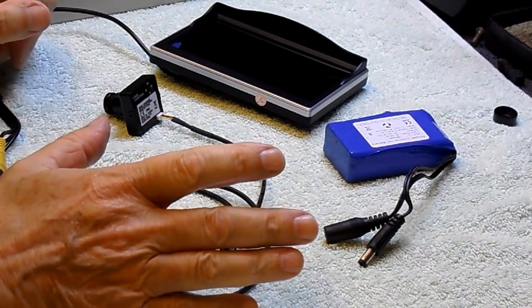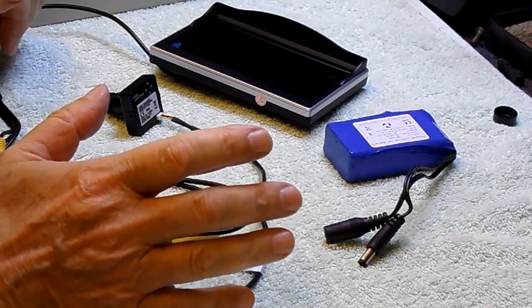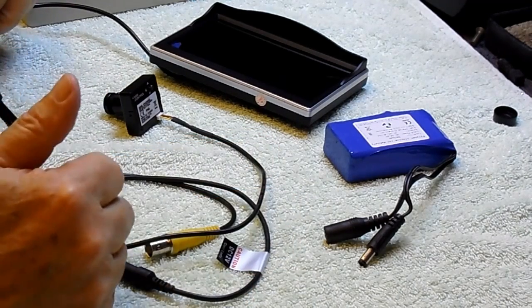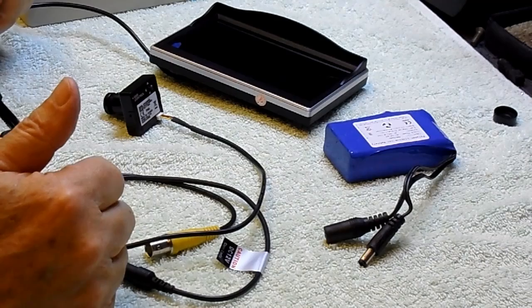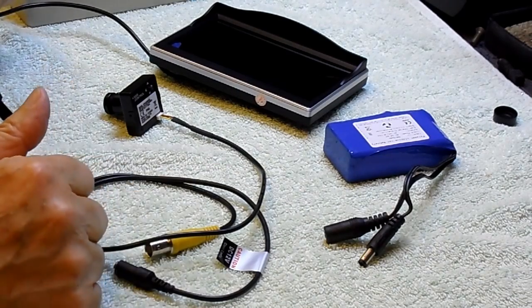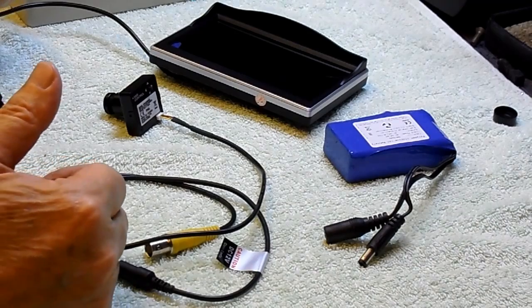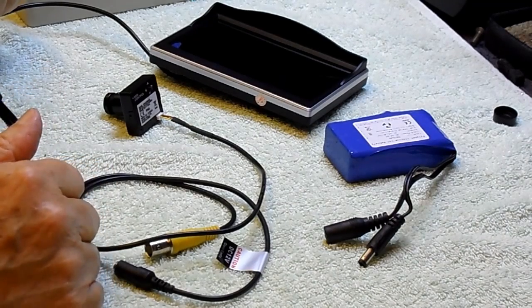Now I've got all the parts ready to build a rear add-on night vision unit. The first thing I'm going to do is test the camera, the monitor, and the battery and make sure they are working before I start cutting and soldering any connections.